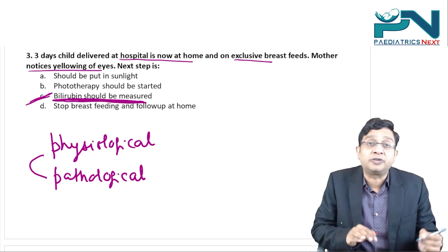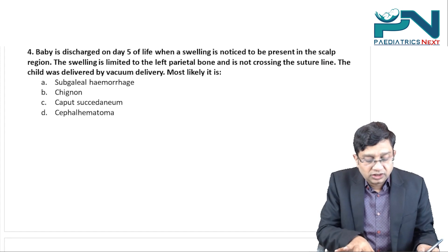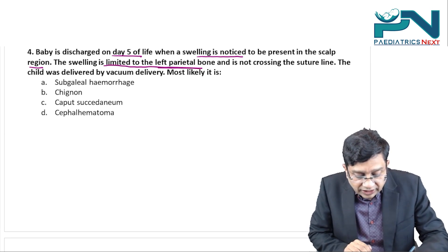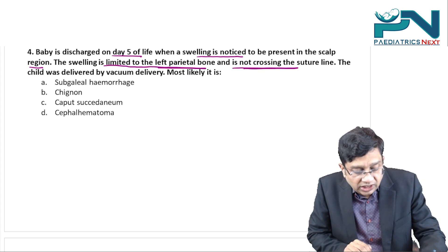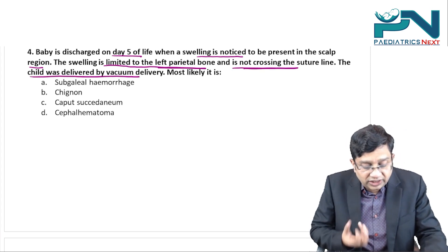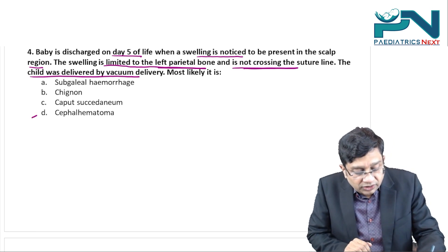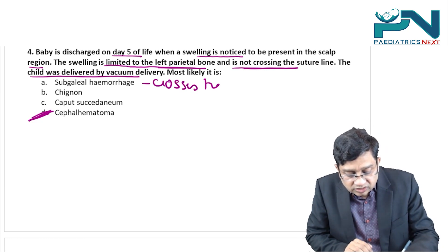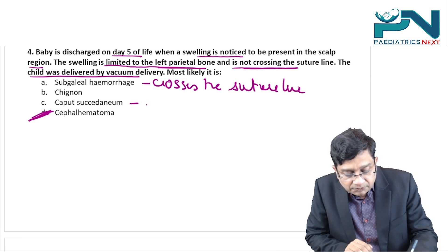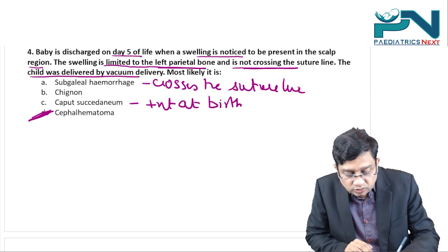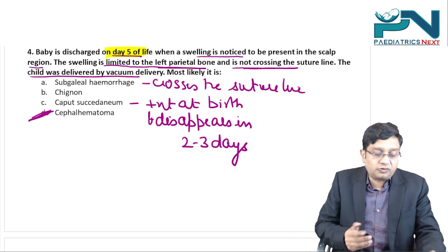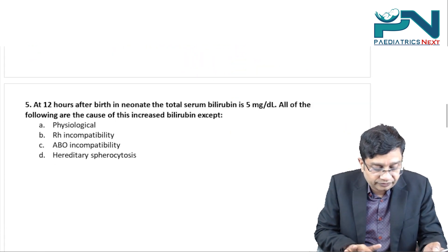A baby discharged on day five of life has a scalp swelling limited to the left parietal bone, not crossing the suture line. The child was delivered by vacuum delivery. The swelling on day five not crossing the suture line favors cephalhematoma. Subgaleal hemorrhage always crosses the suture line, and caput succedaneum is present at birth and disappears in two to three days. Since the swelling is on day five, the answer is cephalhematoma.